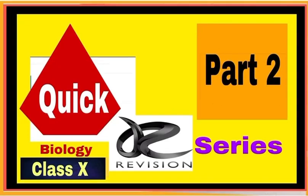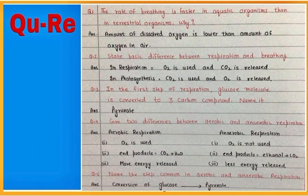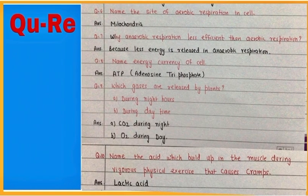Hello students, this is part 2 of the quick revision series with 25 solved questions. Answers provided here are short and crisp for your easy learning. Check answers of question number 1 to question number 5, and learn abbreviations like ATP given in your book.